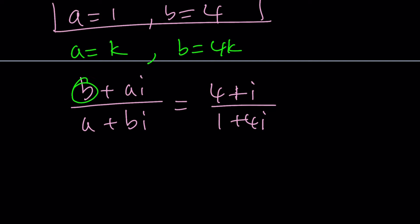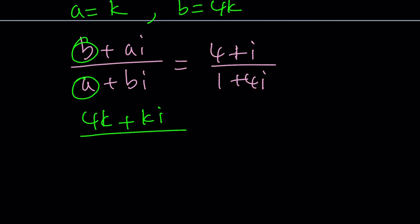And if you plug those in, you're going to get K plus 4. Oops, I did it the wrong way. If you plug in B, you're going to get 4K, 4K plus KI, right?